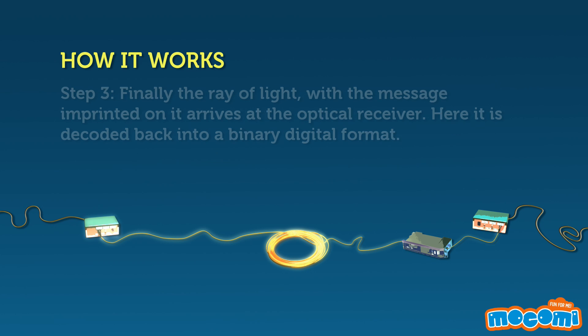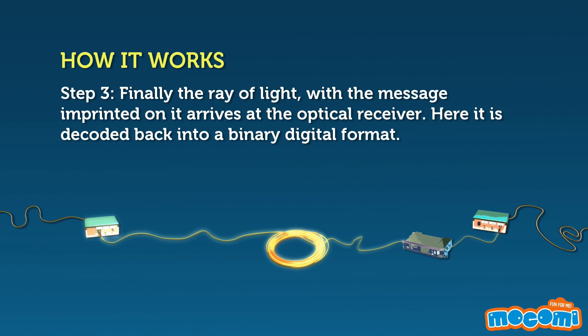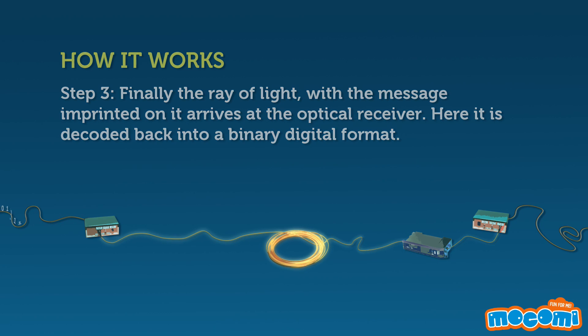Finally, the ray of light with the message imprinted on it arrives at the optical receiver, where it is decoded back into a binary digital format.